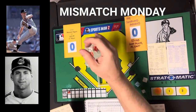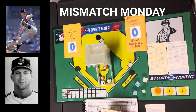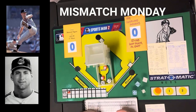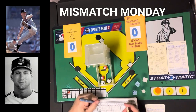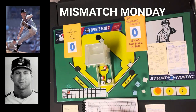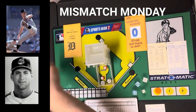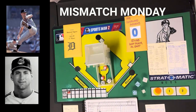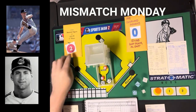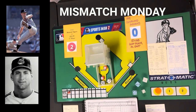Northrup gets a 5-8 — fly ball to right, ending the inning. But two runs come in for the Tigers in the top of the first, so already the Indians are in trouble, losing 2-0.